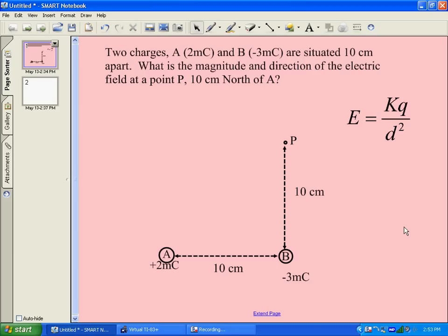The question would be to determine the magnitude and direction of the electric field at some point farther away, 10 centimeters north of A. So we've got them 10 centimeters apart and a point that's north of that, and I want to know the magnitude of the electric field.